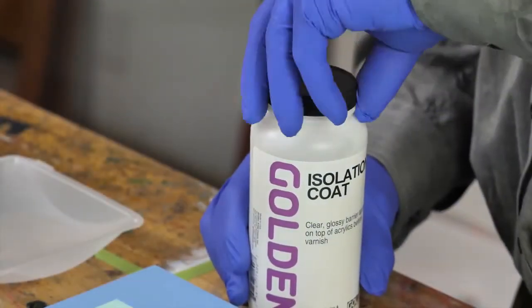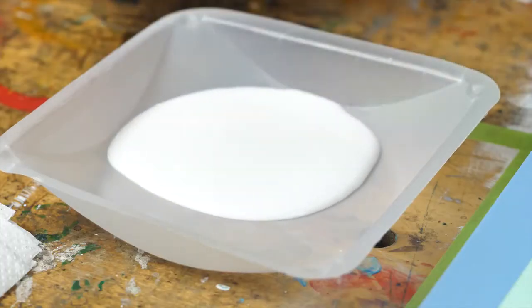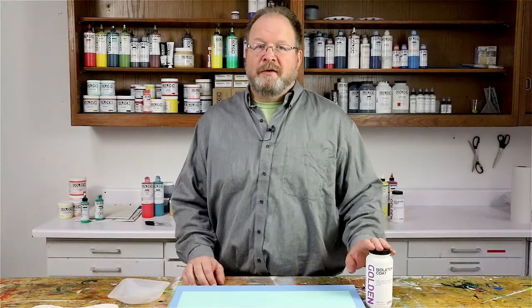For each square foot of your painting you'll need about one ounce. You may need more if your painting is really absorbent or textural, but if it's very smooth and not absorbent maybe you'll need less. It's vital to make sure you have enough isolation coat available before you begin.